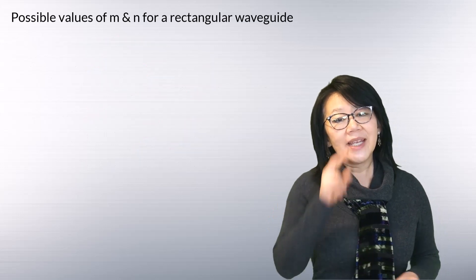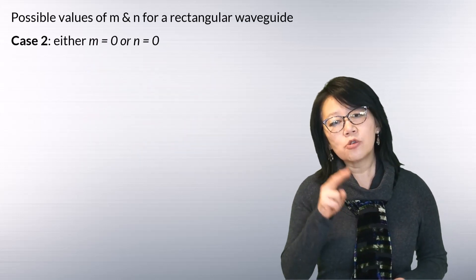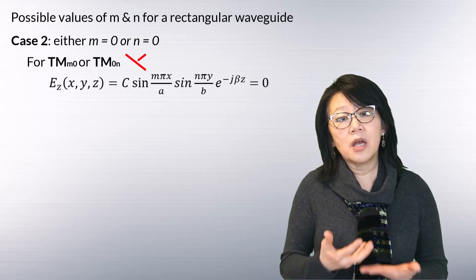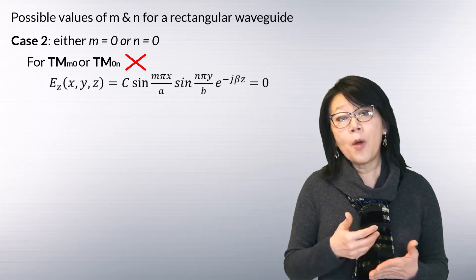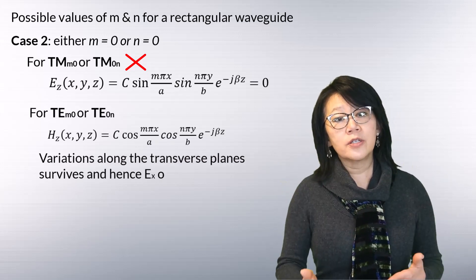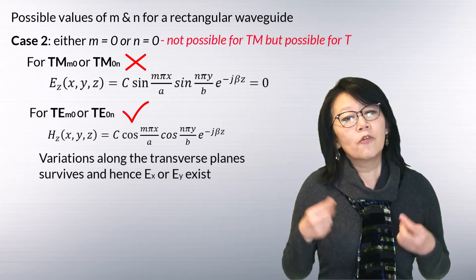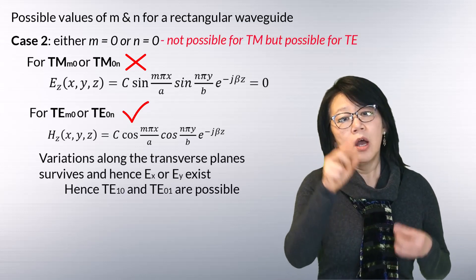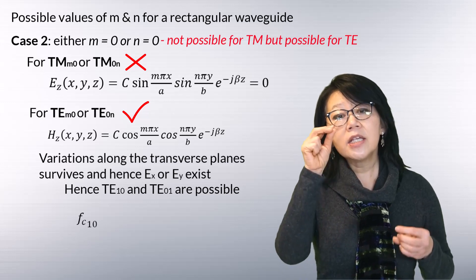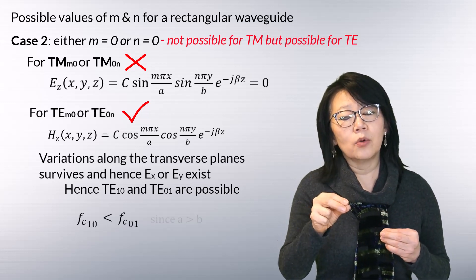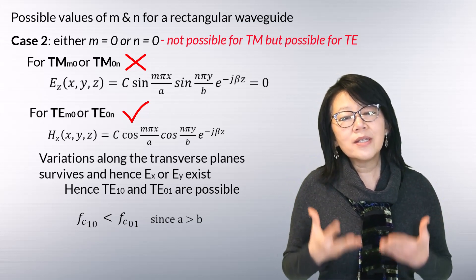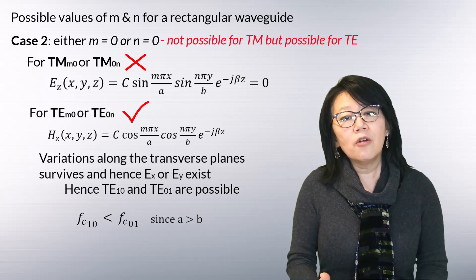In case two, when one of m or n is zero: for the TM case Ez equals zero, meaning TM propagation does not exist if m or n is zero. For the TE case, variation along the transverse plane occurs and propagation is possible — so TE10 and TE01 modes are possible. The cutoff frequency for the TE10 mode is lower than that of the TE01 mode, making TE10 the dominant mode in the rectangular waveguide as it has the lowest possible cutoff frequency.